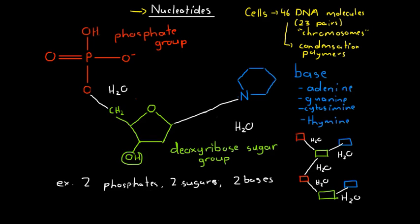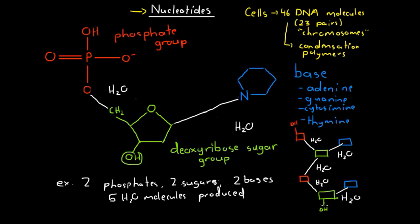So if we create two nucleotides from two phosphate groups, two sugar groups, and two bases, we produce five H₂O molecules in total. This diagram also gives a good visual representation of how each end of a DNA molecule is different: one end ends with a phosphate group with an unbonded hydroxyl group, while the other end has its own hydroxyl group off a deoxyribose sugar. We can clearly see how each end of our DNA molecule is distinct — one ends with a sugar group, one ends with a phosphate group — and this becomes important when we look further at the bigger structure of a DNA molecule.